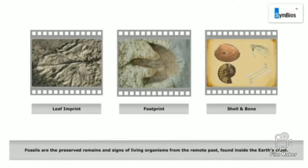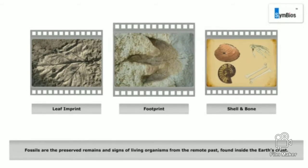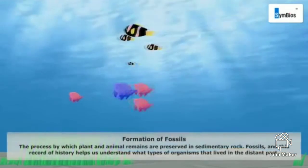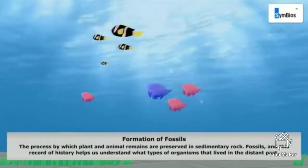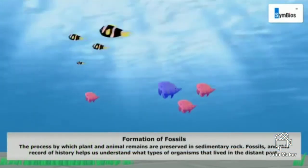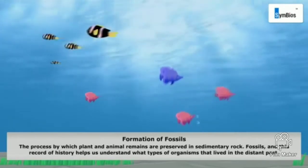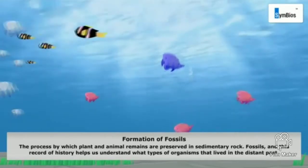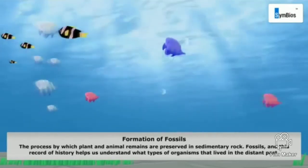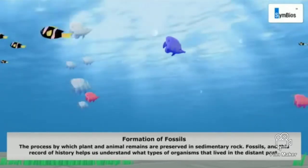Fossils are the preserved remains and signs of living organisms from the remote past, found inside the earth's crust. A fossil can be a leaf imprint, a hardened shell or bone remains, or even a footprint. The process by which plant and animal remains are preserved in sedimentary rock is called fossilization, and this record of history helps us understand what types of organisms lived in the distant past.